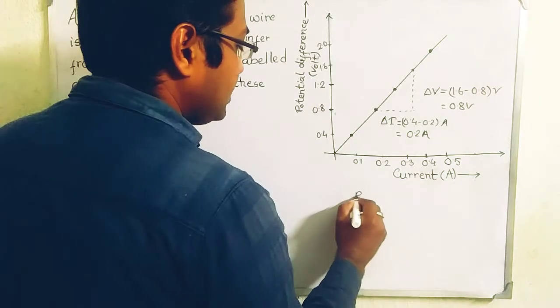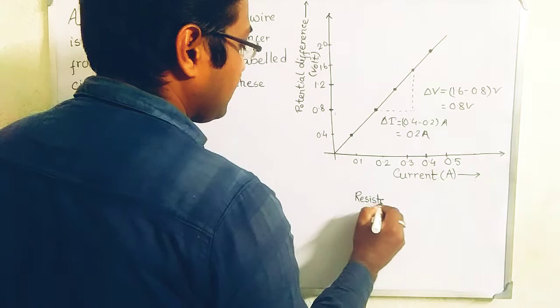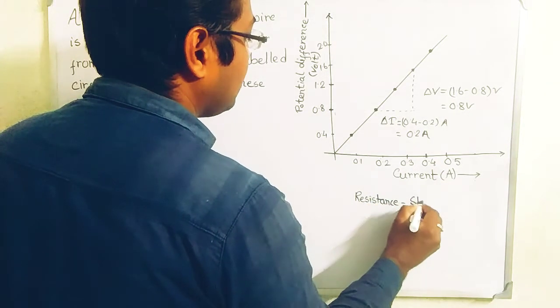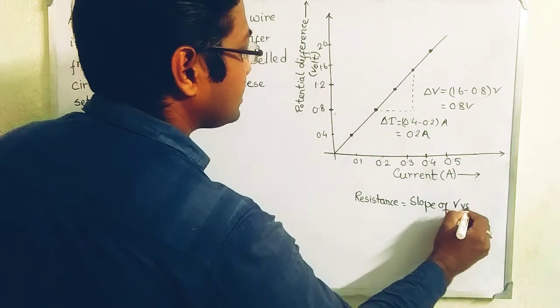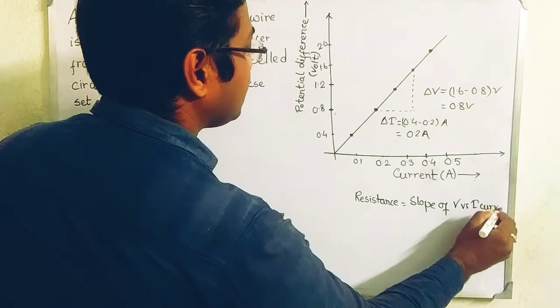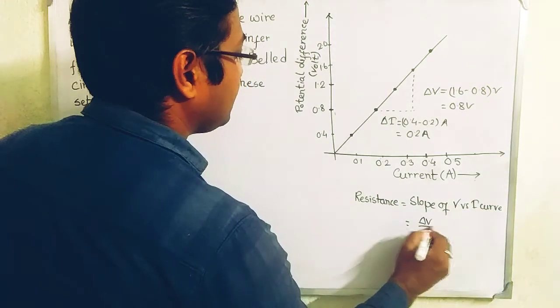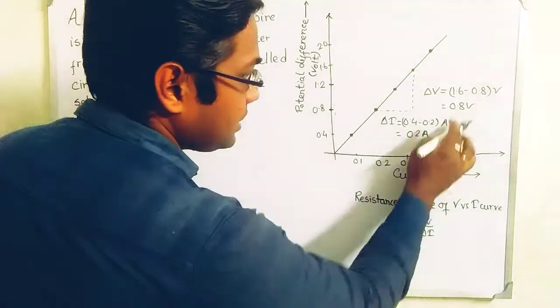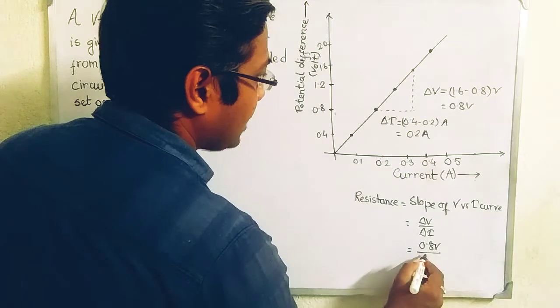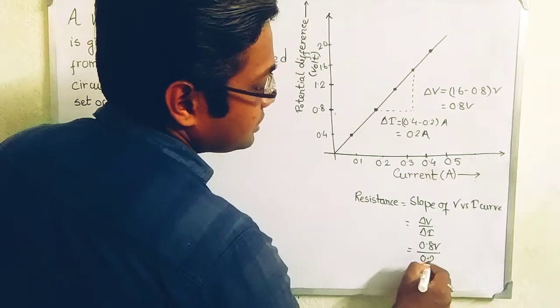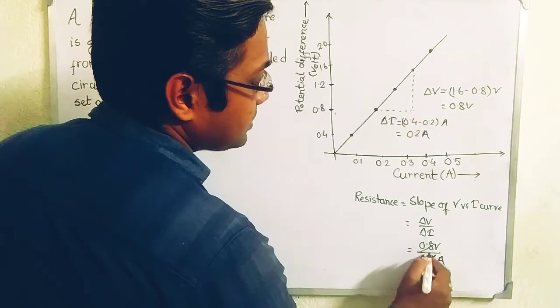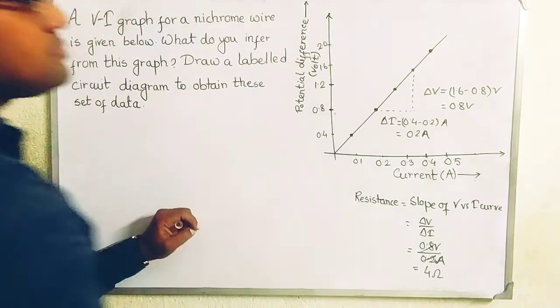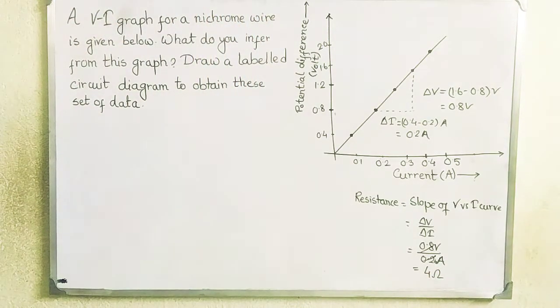If I want to calculate the resistance here, which is basically the slope of V versus I curve, that is ΔV divided by ΔI. What is ΔV? ΔV is 0.8 volt. And what is ΔI? ΔI is 0.2 ampere. So it gives you basically 4 ohm. The data we have obtained here is for the resistance 4 ohm.